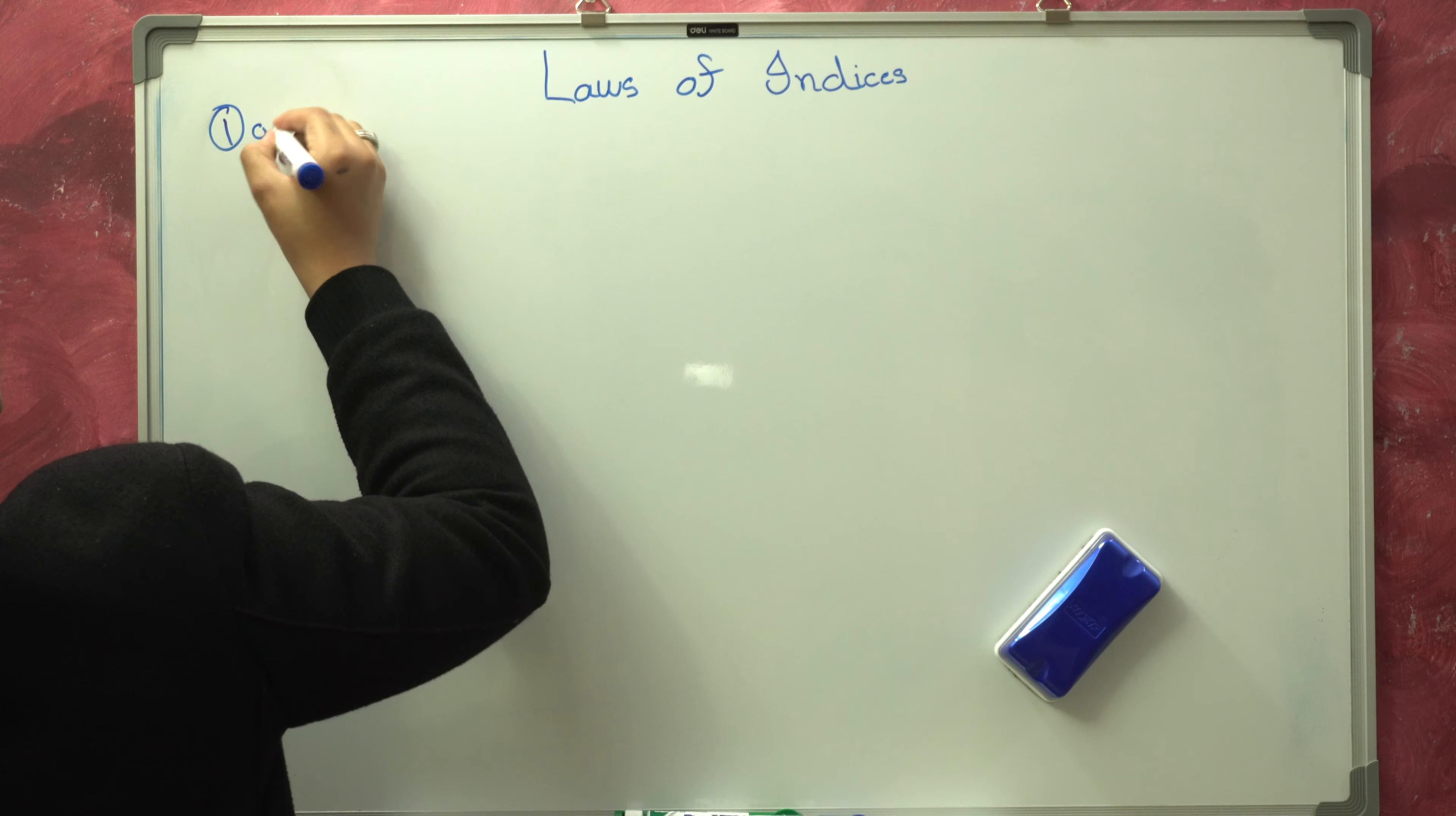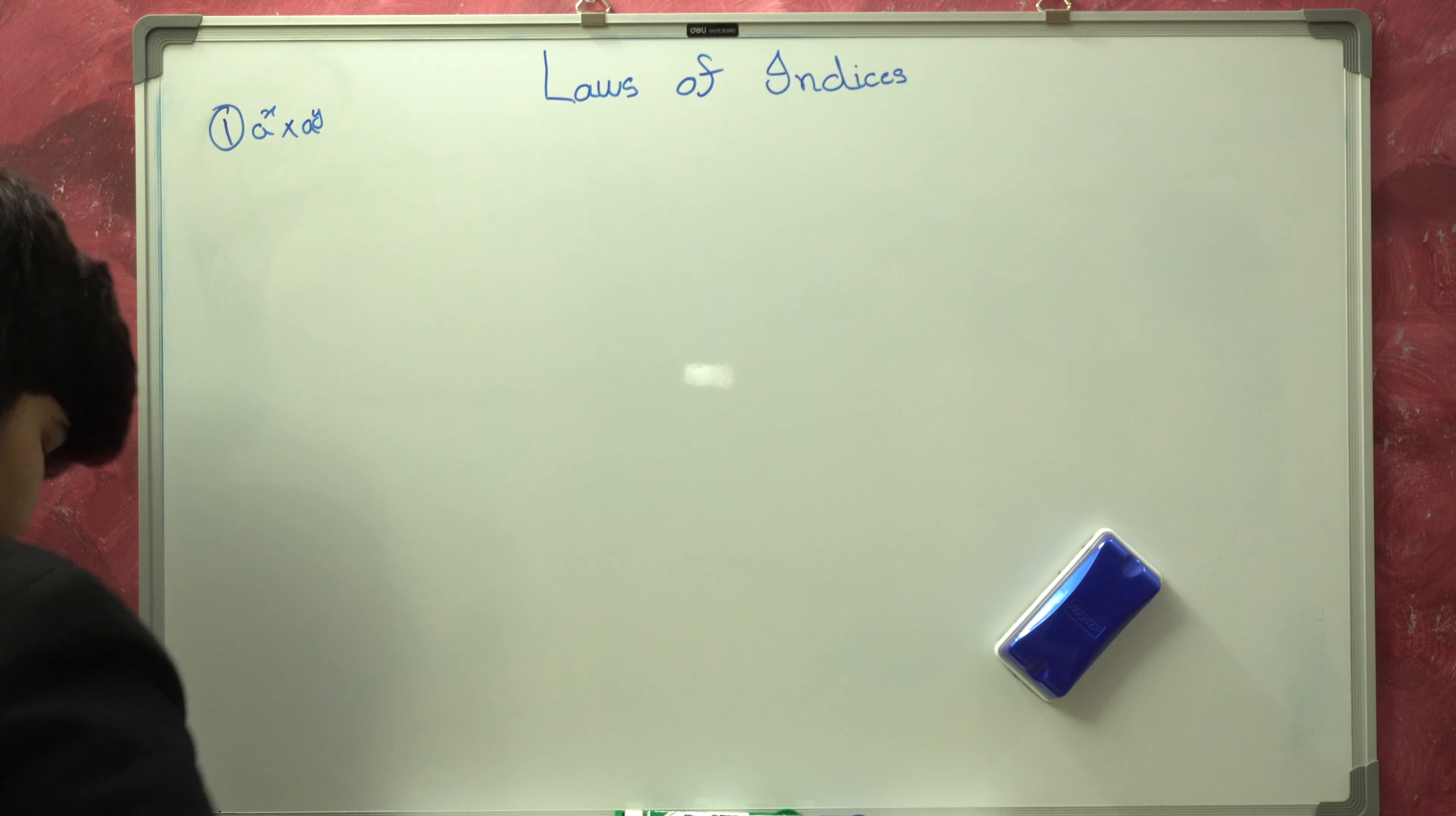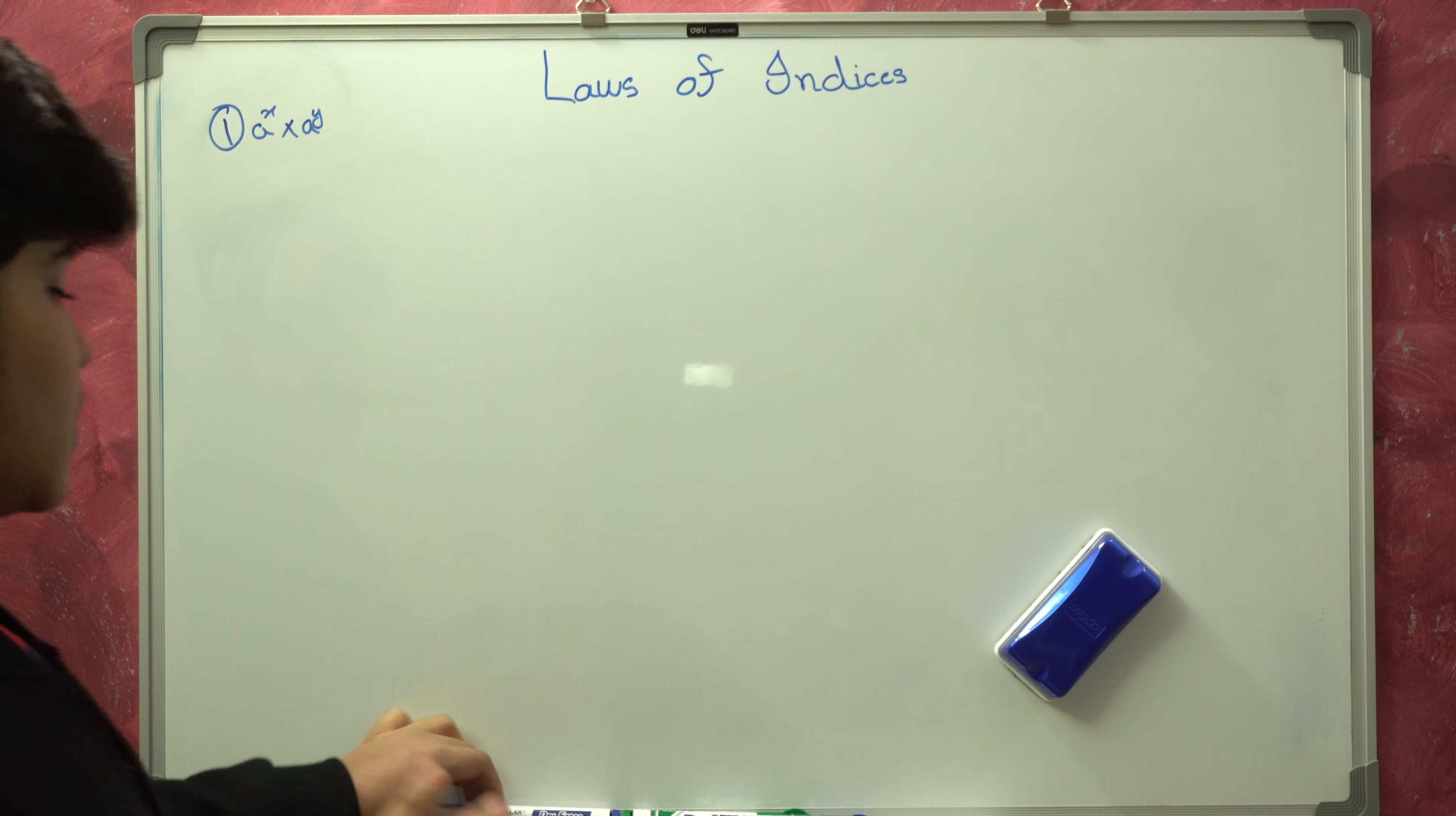I'm going to write the first law. The first law is A to the X times A to the Y. Before I tell you what the law is, I want you to know what is the base and what is the power.